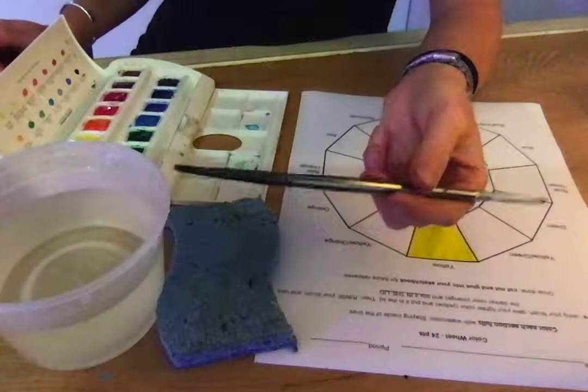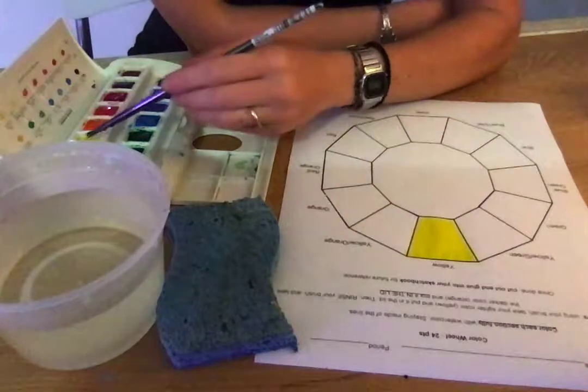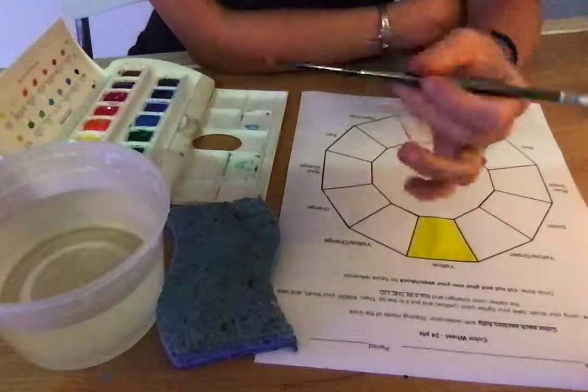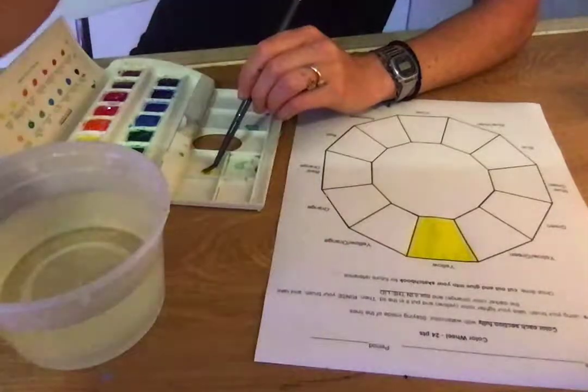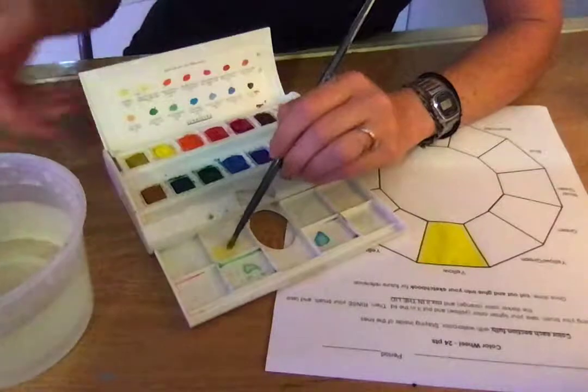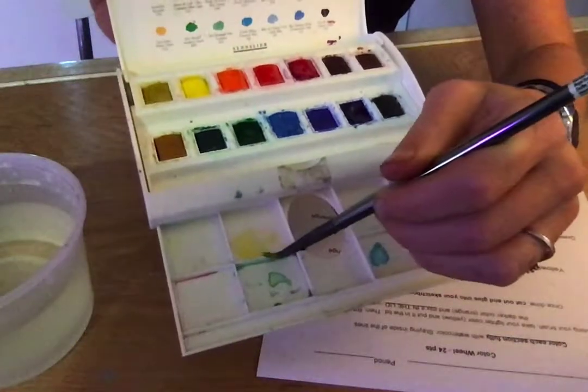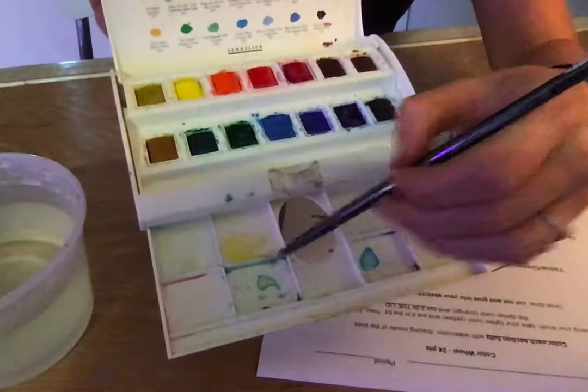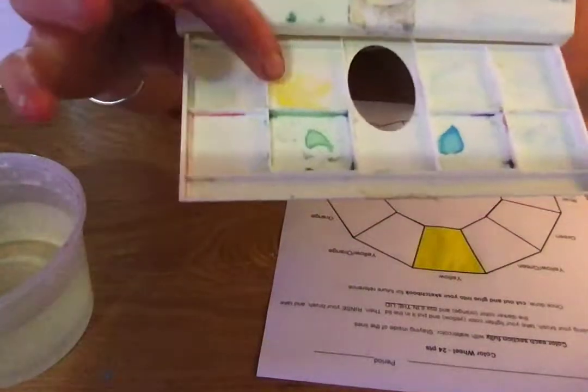And you don't want a ton of water, so I'm gonna dab it off on my sponge a little bit. I'm going to pick up some yellow pigment—you don't need a lot—and I'm just going to kind of dab it down into one of the mixing trays that you see right here. I'm gonna get as much pigment off the brush as I can. And again, you don't need much, so you can see there's only like a tiny bit of yellow in there.